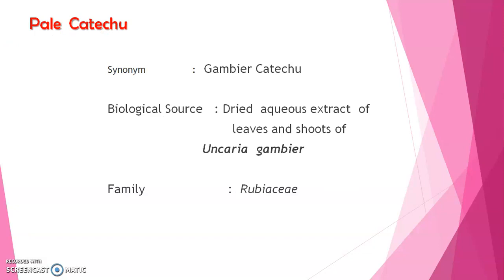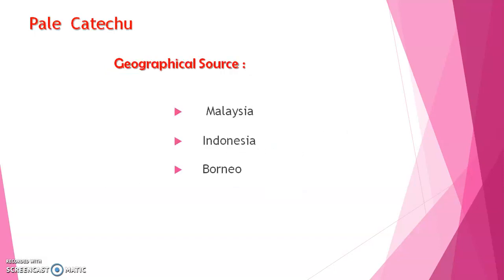Pale catechu — synonym is gambier catechu. Biological source: it is the dried aqueous extract of leaves and shoots of Uncaria gambir, family Rubiaceae. Geographical sources are Malaysia, Indonesia, and Borneo.